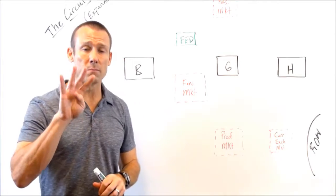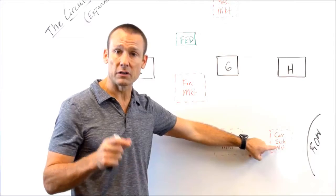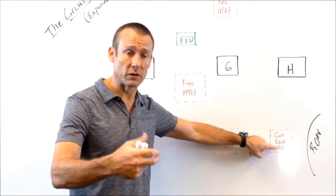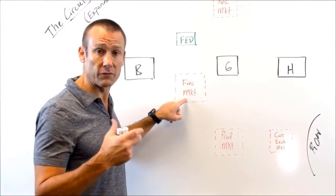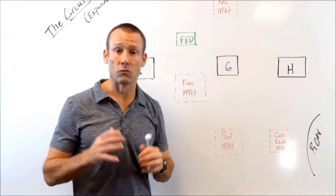And then we've got our four macro aggregate markets, which is the product market - you go there if you need goods and services. Currency market, you go there if you want to exchange one currency for another. The financial market, you go there if you want financial capital. And the resource market, you go there if you want resources.